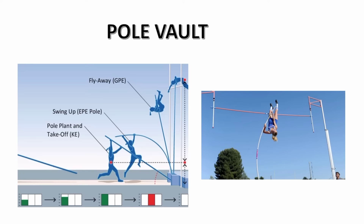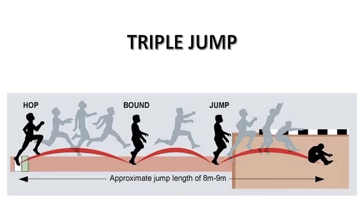The pole vault may be the toughest field event to master. The athlete runs down the track holding a pole, then plants the far end of the pole into a metal box on the ground and propels themselves up and over a high bar, using both a jump and the spring of the pole to gain height. They must clear the bar without knocking it off, then land on a large soft mattress for safety.